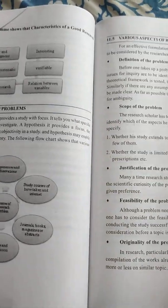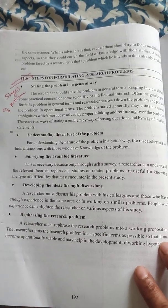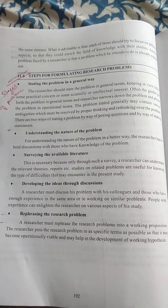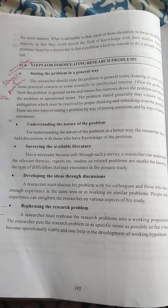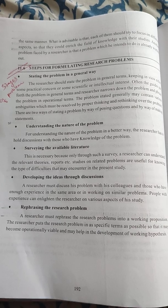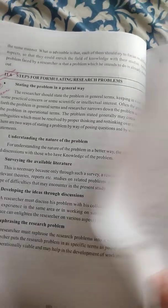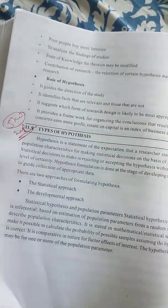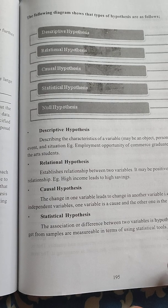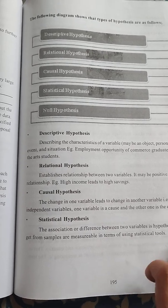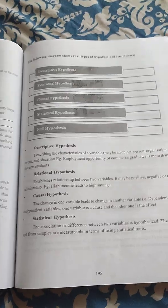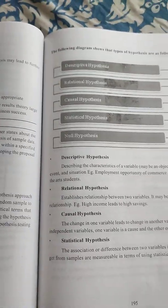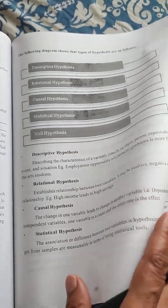The steps for formulating a research problem include: surveying the available literature, developing the ideas through discussions, and understanding the nature of the problem. The types of hypothesis are: descriptive hypothesis, relational hypothesis, causal hypothesis, statistical hypothesis, and null hypothesis. Research methods and research hypothesis are both important.